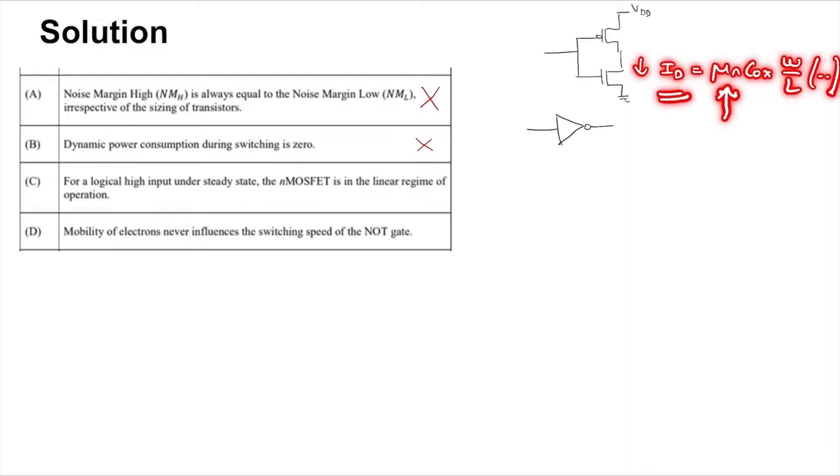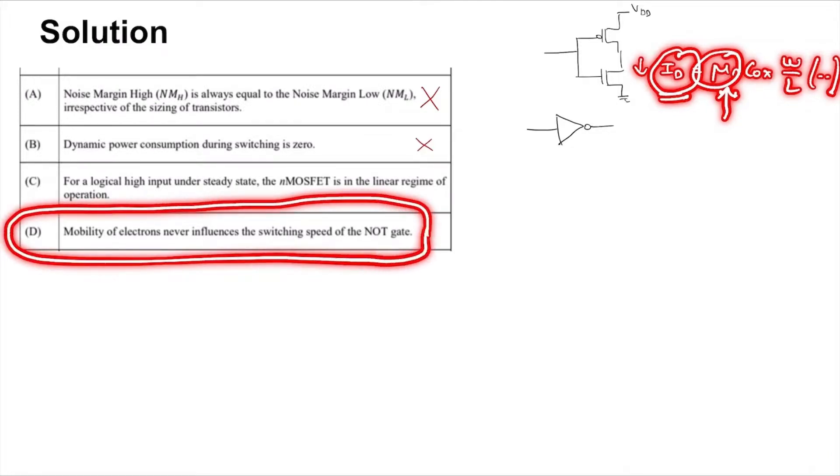And so if the mobility of electrons is greater or lesser, the drain current for any VD, VG, and VS will be different, and that will affect the speed of the NOT gate when pulling the output to zero. So clearly option D is also not true.